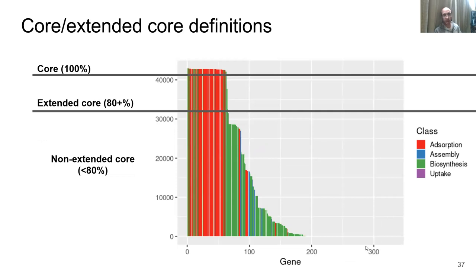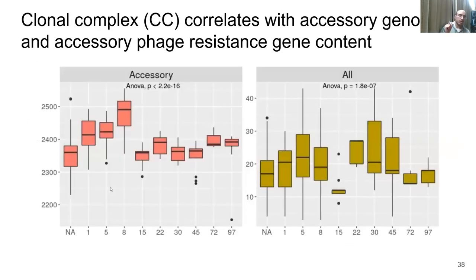To be clear about definitions: core genes are found in the entire species; extended core genes are in 80% or more of strains; and non-core genes are in 80% or fewer. Looking phylogenetically at possible associations between clonal complex and accessory phage resistance gene content, in both cases there was a significant overall association — significant differences across CCs in the level of accessory genome content or accessory phage resistance genes — supporting the CC-type restriction specificity story that's been known and shown experimentally for a long time.